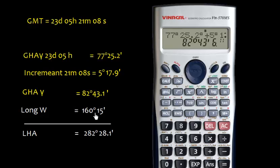To find LHA, we subtract because LHA is least. Subtracting 160 degrees 15 minutes gives us minus 77 degrees 31 minutes and 54 seconds. Since it can't be minus, we add 360 degrees, giving us 282 degrees 28.1 minutes.